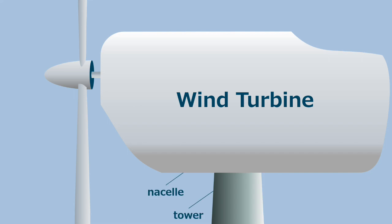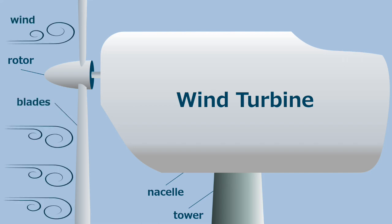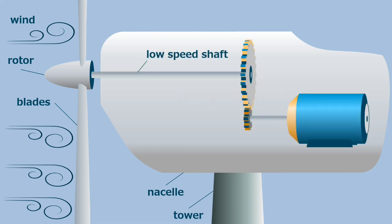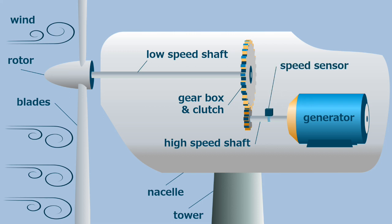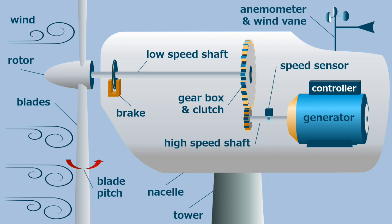So, we have the nacelle and the tower, the rotor, and the wind that impulsionates the blades. This makes the low speed shaft rotates, and through a gearbox and clutch, to make the high speed shaft rotates, that is connected with the generator. We have a speed sensor, that provides a signal to a controller, and we actuate on the blade pitch, changing the amount of wind power that goes within the turbine. Additionally, we have a brake system, and some anemometer and wind vane, to control the yaw drive, so we can align with the wind direction.